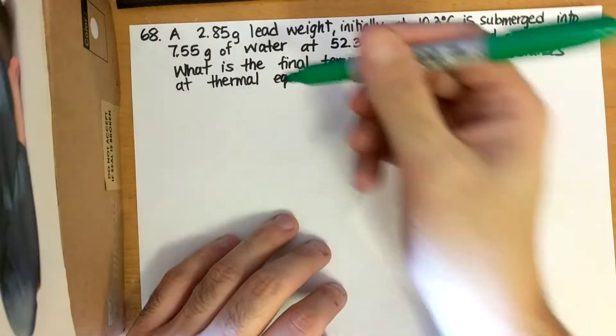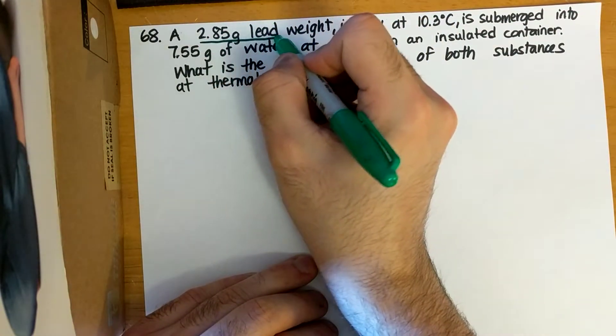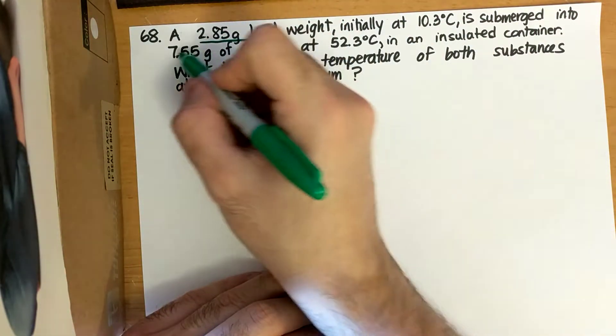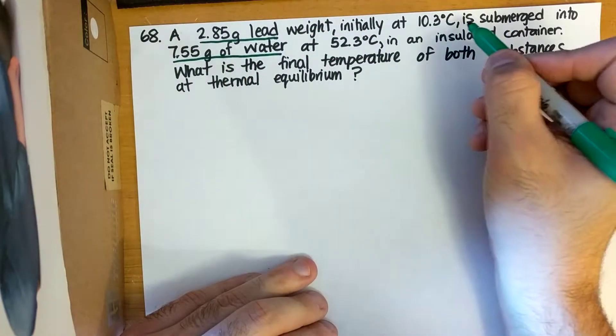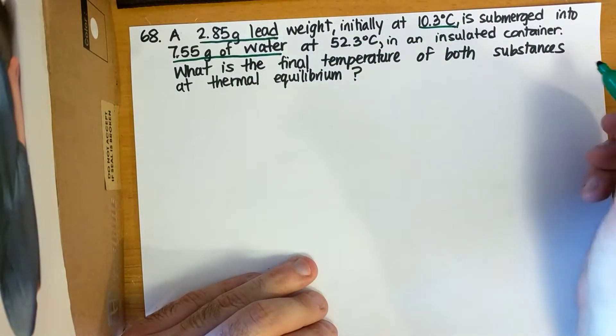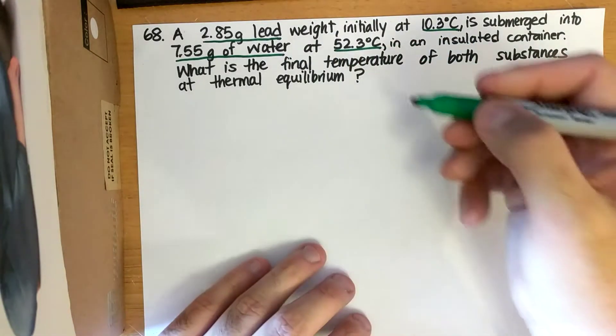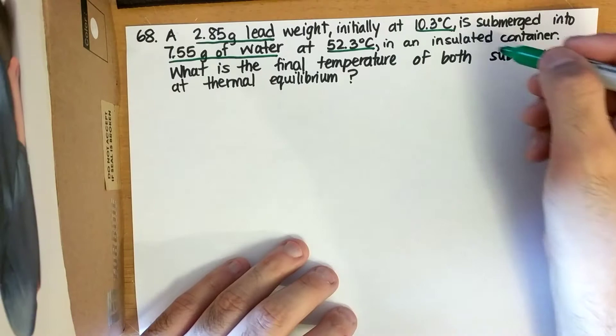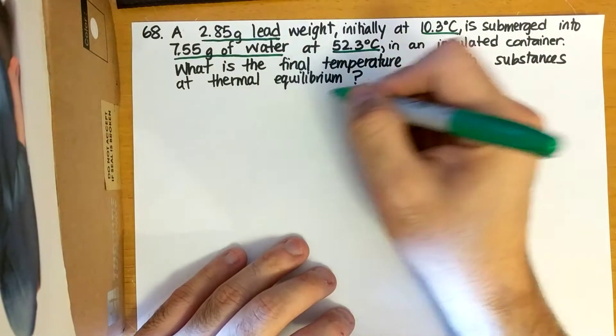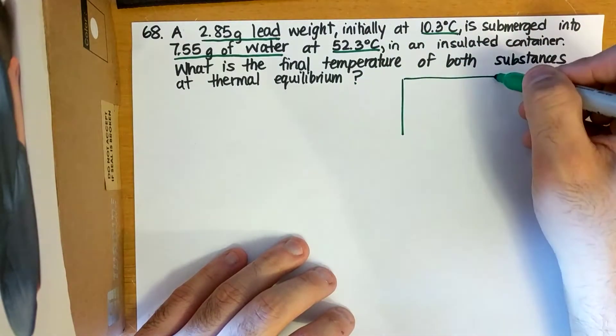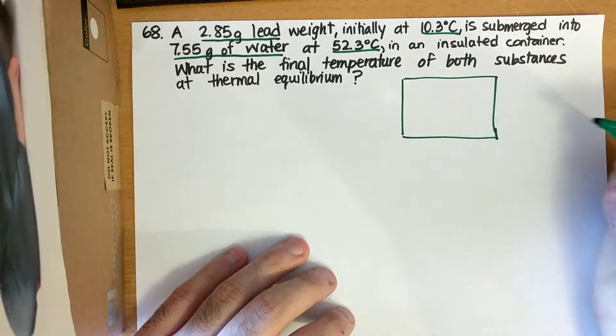And specific heat capacity are some known values for certain objects like lead or water. So in looking at this question, I have 2.85 grams of lead, and I have 7.55 grams of water. The lead is at 10.3 degrees Celsius, and the water is at 52.3 degrees Celsius. So I kind of want to draw like a system and surroundings type of situation. So I want to draw a picture first.